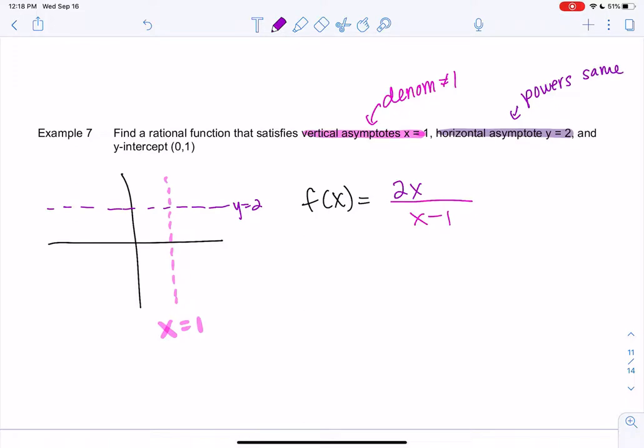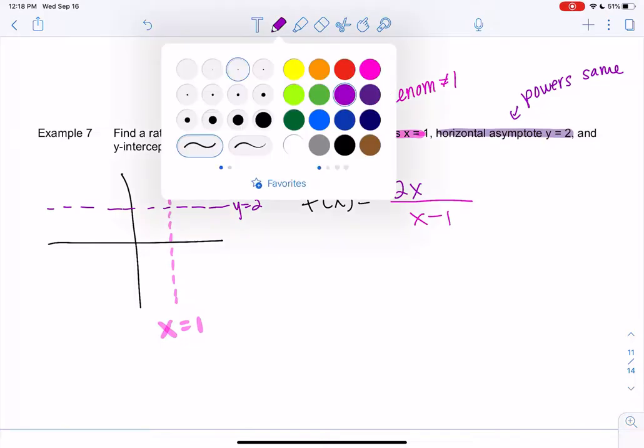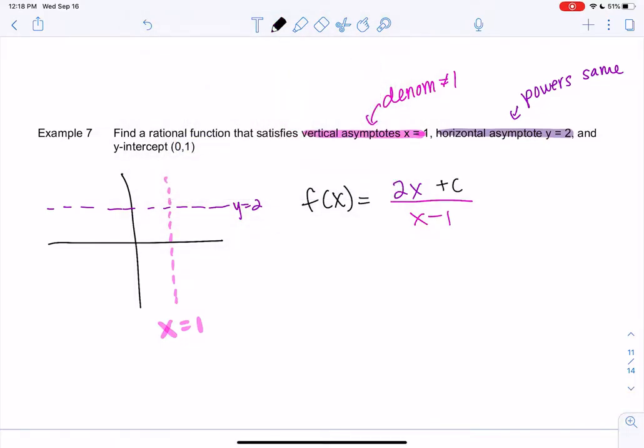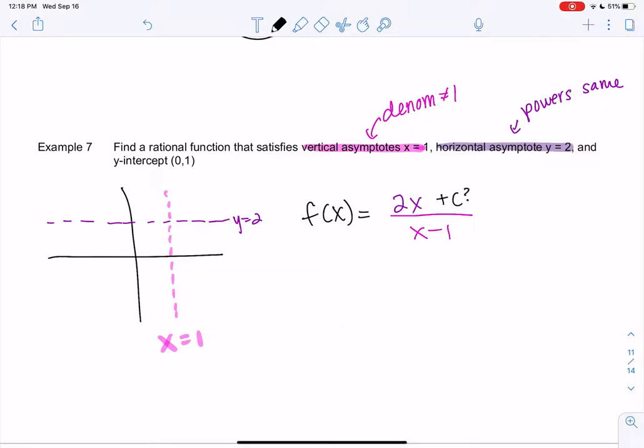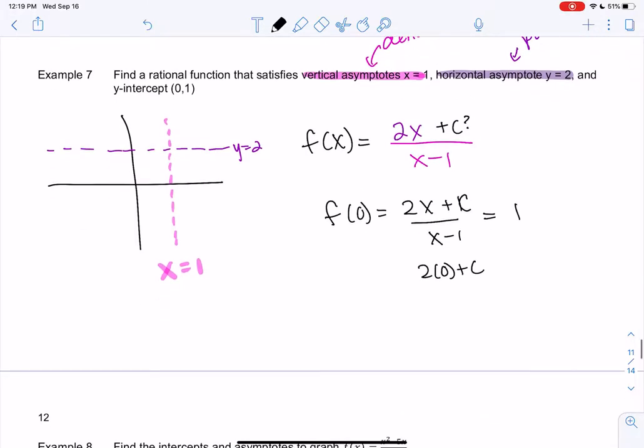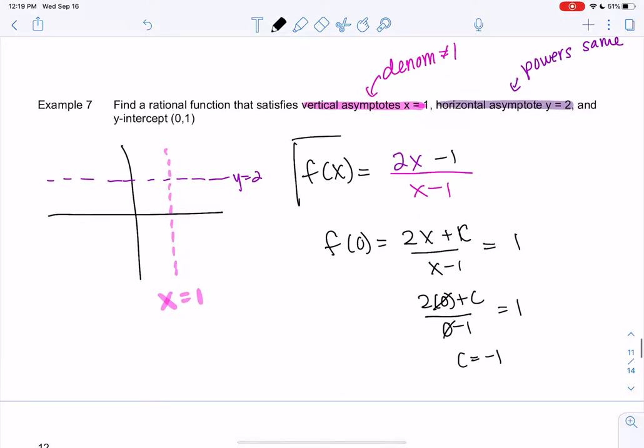We know y intercept of (0,1). So maybe there's a plus c. We want f(0) equals (2x + c)/(x - 1) equals 1. So 2 times 0 plus c over x minus 1 equals 1, so c would be negative 1. My function would be (2x - 1)/(x - 1). This is one possible solution; there are many solutions.